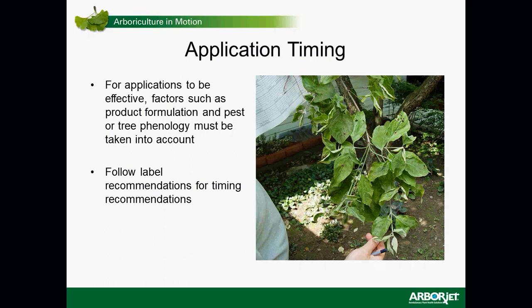Tree phenology has to be taken into account. Where is your pest? What is the tree doing? If treating for a nutrient deficiency, wait until the tree is completely foliated — late spring or early summer — or treat in fall. Always follow label recommendations for timing. Assess the problem: assess where the tree is at, its susceptibility to the pest, and where the pest is in its life cycle.